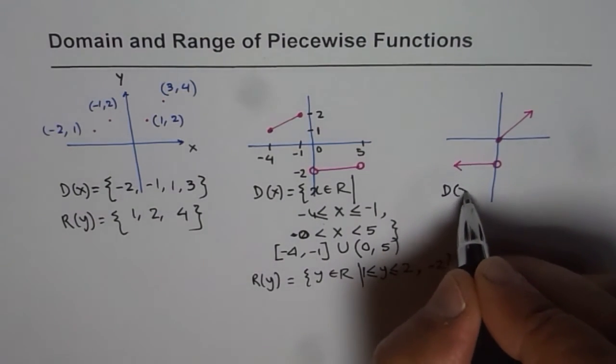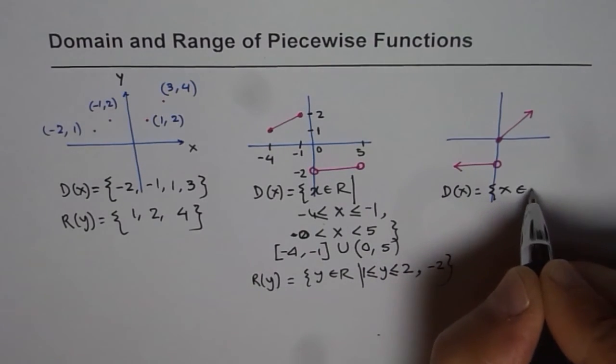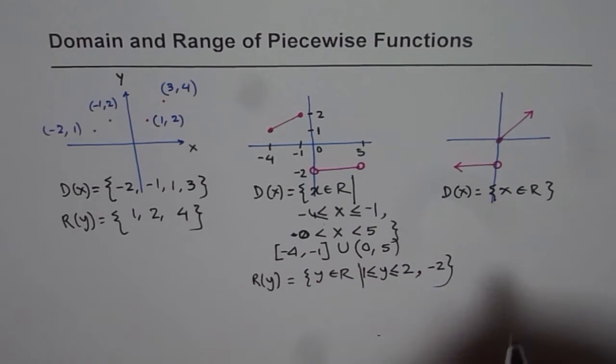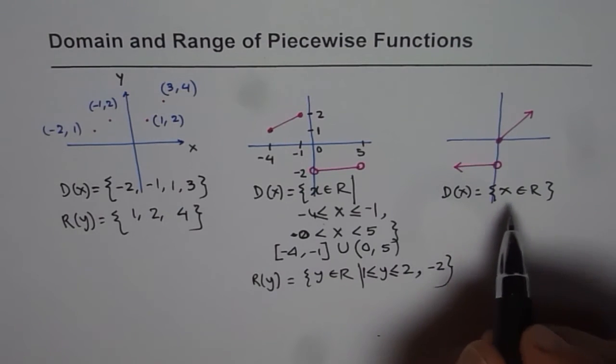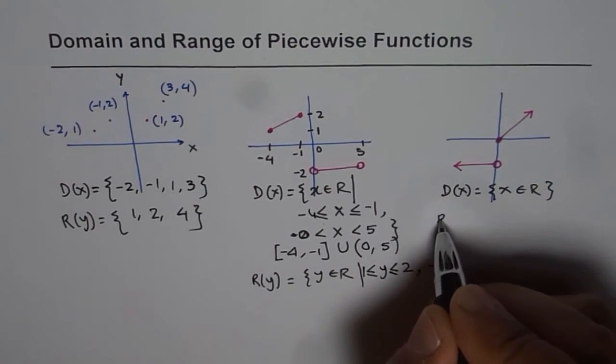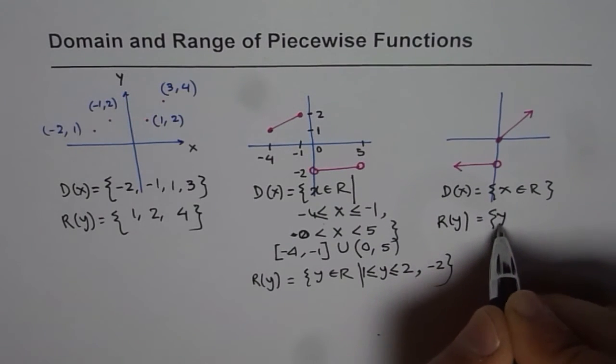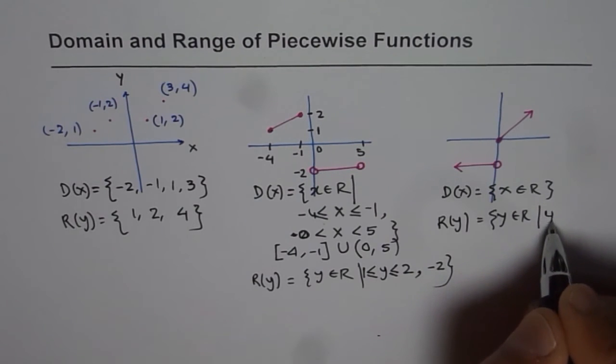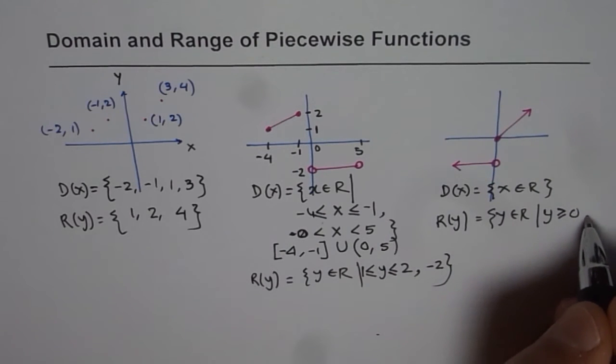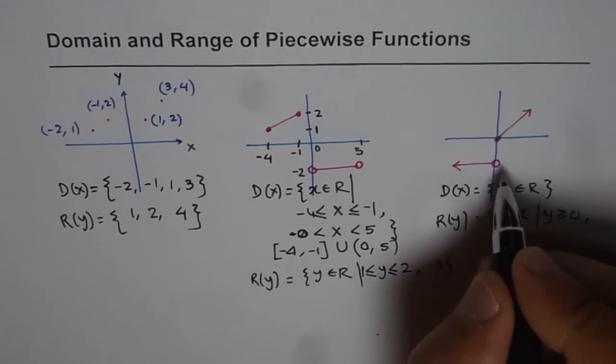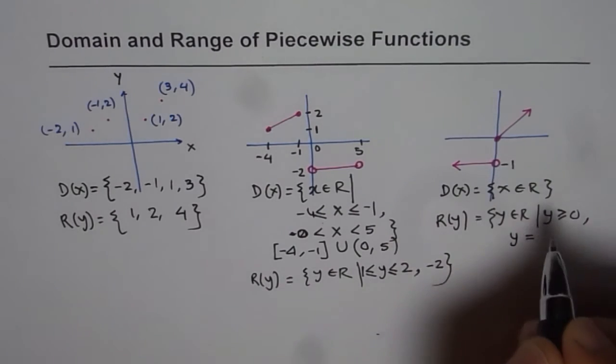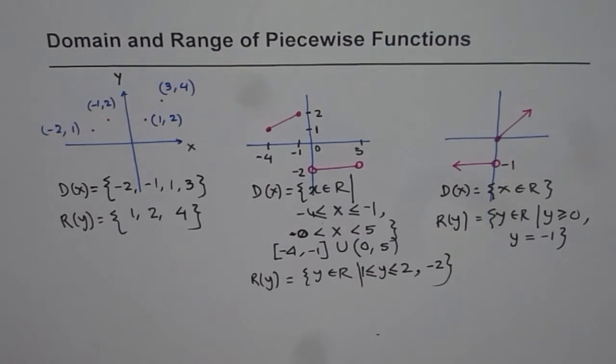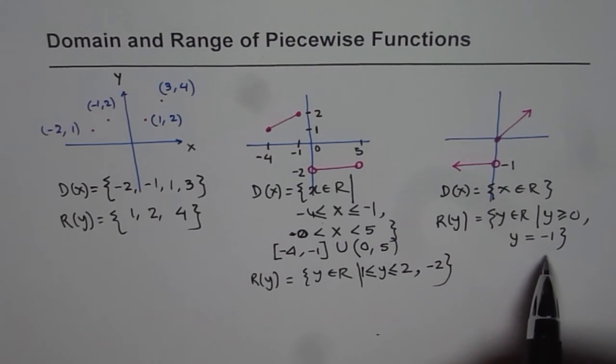So here the domain for the function is x belongs to real numbers. There is no restriction on the domain. However, range is restricted. So range is y belongs to real numbers such that y is greater than or equal to 0 - that is this part - and y equals minus 1, just as we had here. So that is how we could write domain and range for this given function. I hope with this example you appreciate that domain and range could be a combination as we have given here.